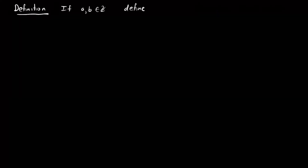We're ready to define arithmetic in Z mod n. A natural definition for addition is: [a] + [b] = [a + b]. A natural definition for multiplication is: [a] · [b] = [ab]. We'd like to check whether these operations actually make sense — since equivalence classes can be represented in infinitely many ways, we need to verify the result is independent of the chosen representative.